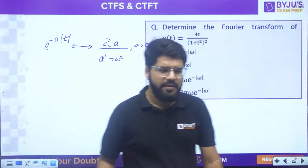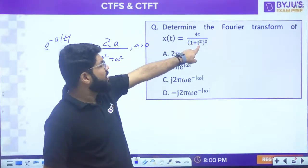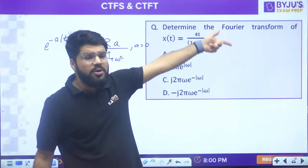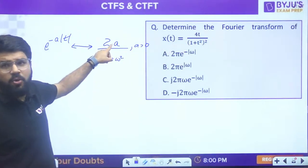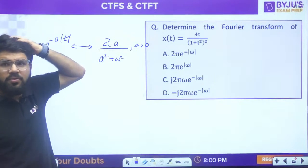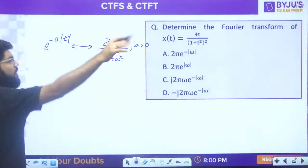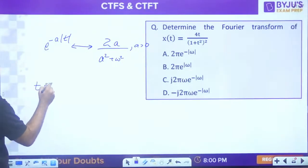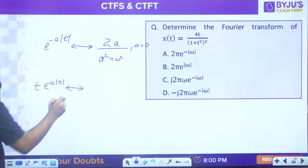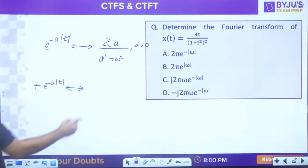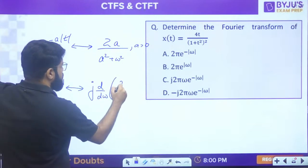Put a = 1: e^(-|t|) has FT = 2/(1 + ω²). Now apply frequency differentiation for t·e^(-|t|): j·d/dω[2/(1 + ω²)]. Differentiating: using chain rule on 1/(1 + ω²), derivative is -2ω/(1 + ω²)². So the result is j × (-4ω)/(1 + ω²)² = -4jω/(1 + ω²)².